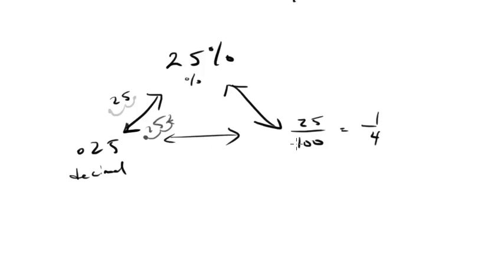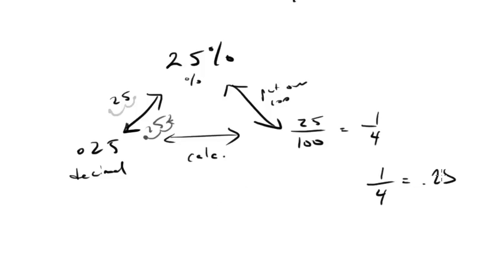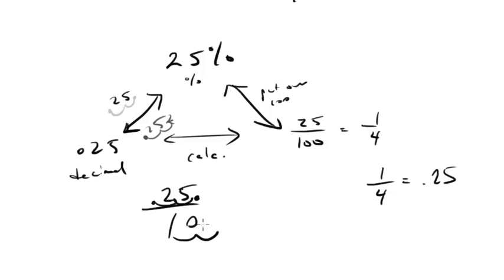To go from a fraction to a decimal, you do the actual division — either 25 divided by 100, or 1 divided by 4, and you get 0.25. To go from a decimal to a fraction, you can write it as 0.25 over 1, then move the decimal point over two spaces in both numerator and denominator to get 25 over 100, which reduces to 1 out of 4. Many calculators also have a decimal-to-fraction key. For example, 0.73 over 1 becomes 73 over 100 by moving the decimal two places.